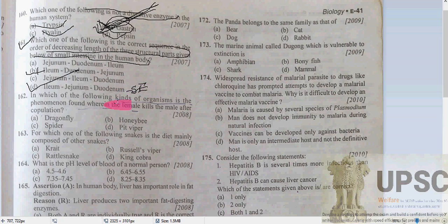Question 162: which of the following organisms is known as the one where the female kills the male after copulation? The answer is dragonfly. The female dragonfly kills the male after copulation because dragonflies copulate for a prolonged period of time, and the male cannot trust her to mate with her before she deposits eggs.